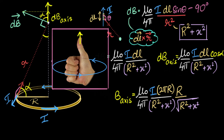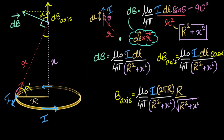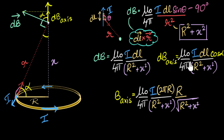To summarize: we approach this by starting with Biot-Savart's law, then calculate the magnetic field due to a small piece of the wire — first in magnitude, then in direction. We realize that the axial components add up, so we only consider the axial component. Finally, we integrate it over the entire loop to calculate the total magnetic field.